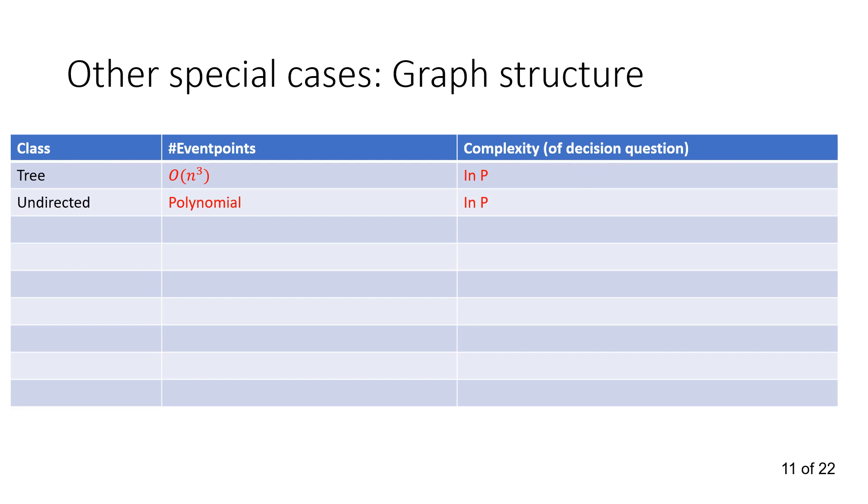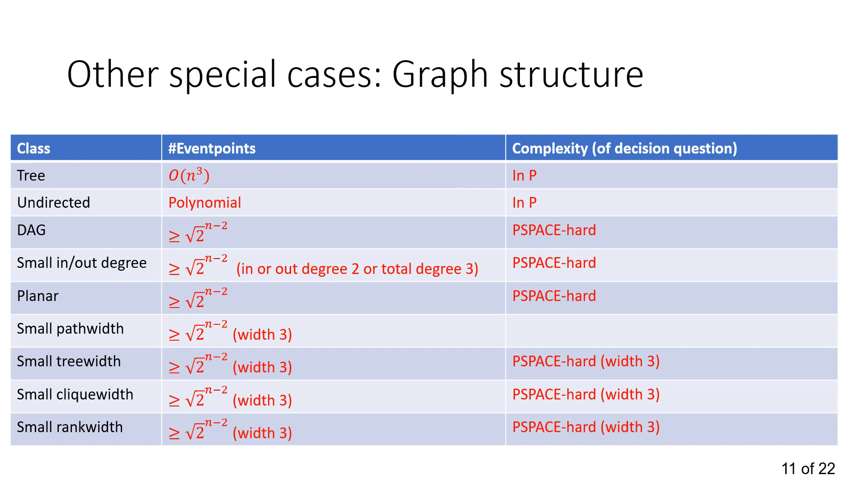So we can also talk about other special cases of graph structures. So we talked about trees and undirected graphs, but there are others such as DAGs, small in- and out-degree graphs, planar graphs, small tree-width graphs, and basically tree-like graphs, graphs of small path-width, which are basically path-like, graphs of small clique-width, which for some reason is not clique-like but at least the clique has a small clique-width, or finally small rank-width. This is basically the list of all the graph structure special cases I know of. So, it turns out that our lower bound is actually in all of these special cases. Therefore, in any number of them, it's still going to be hard. Except for maybe small path-width, which is a question we don't know if that's hard or not. But everything else is PSPACE-hard and has a huge number of event points. Finally, we also managed to show that DAGs especially are in PSPACE, and therefore the question there is PSPACE-complete.